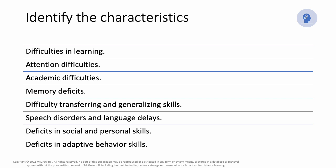When we identify the characteristics, we will look at difficulties in learning, attention difficulties, academic difficulties, memory deficits, difficulties transferring and generalizing skills, speech disorders and language delays, deficits in social and personal skills, and deficits in adaptive behavior skills.